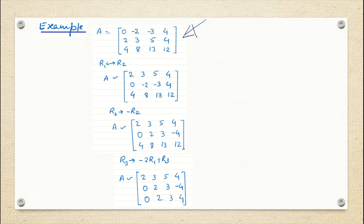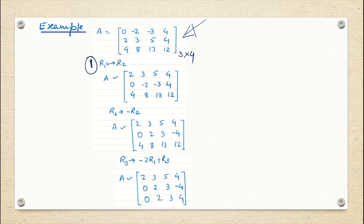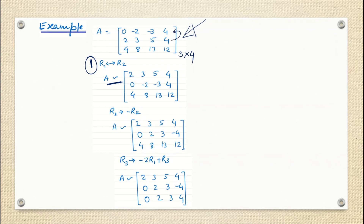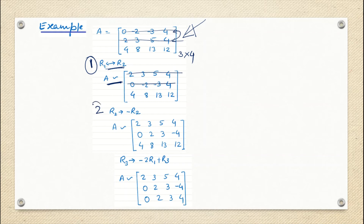Consider a numerical example. Matrix A is a 3×4 rectangular matrix — not a square matrix. Elementary row or column operations can be performed on any matrix. The first operation is interchanging R1 and R2, giving an equivalent matrix. The second operation is R2 → −R2, meaning we multiply minus 1 into R2, placing a minus sign on each and every element of that row while R1 and R3 remain unchanged.